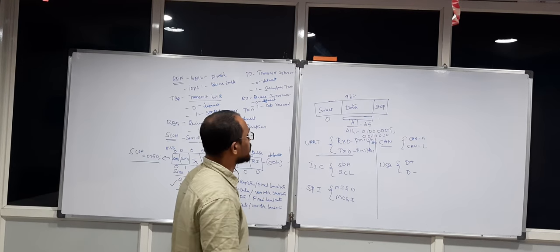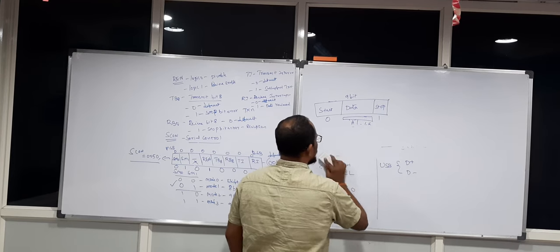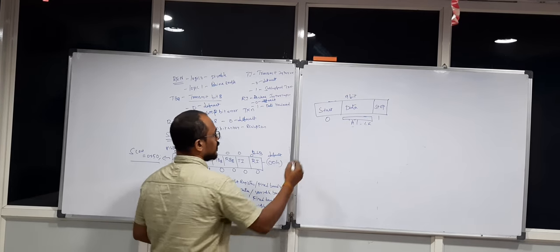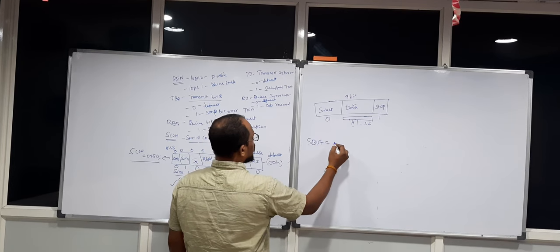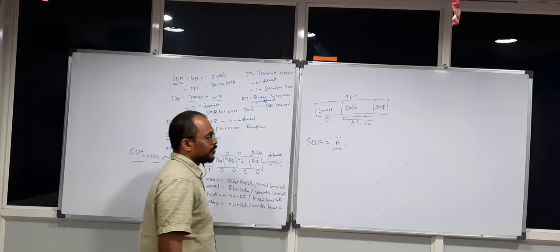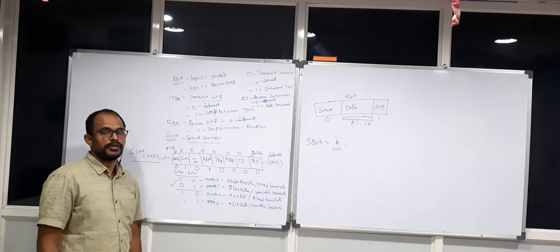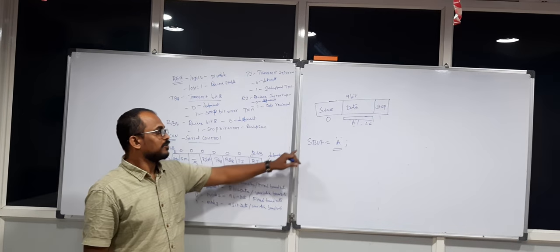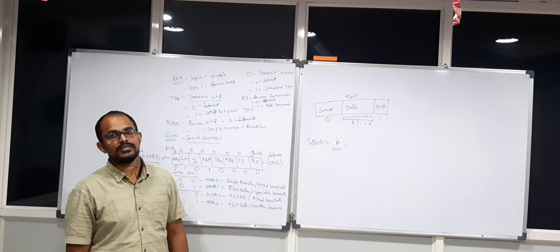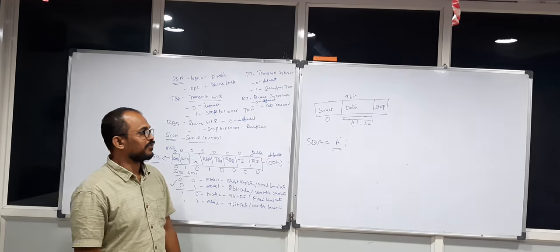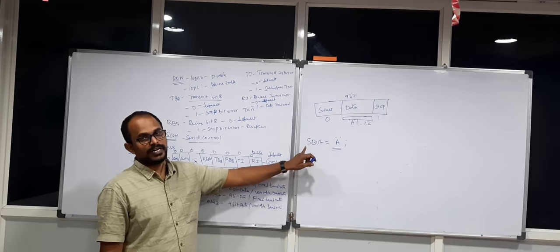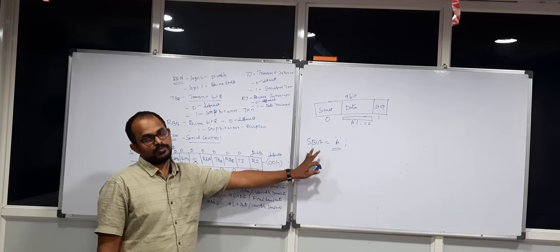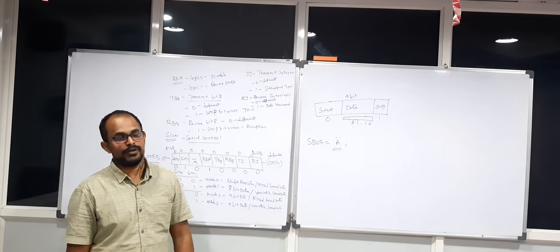The second important register is SBUF — the serial buffer register. It is an 8-bit register with a capacity of 1 byte. It is not bit-addressable, so you must access the entire register. For transmission, you place your data into SBUF to transmit. For reception, data received from an external device first arrives at SBUF, from where you can move it into a temporary variable in the microcontroller.